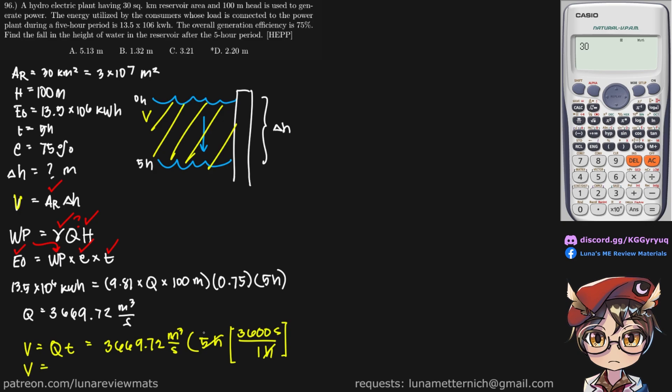So if we multiply this, Q and T, it should return a value of 66,050,050 cubic meters.